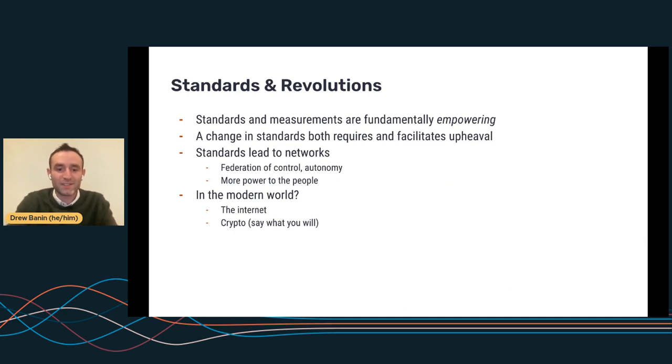Okay. So standards and measurements are fundamentally empowering. It's one of the big themes. Why do we see standards showing up in the Magna Carta? And why do we see the metric system coming out of the French Revolution? Because a change in standards both requires and in some ways facilitates upheaval. These standards lead to networks. They lead to a federation of control and more autonomy for the people that participate in them.